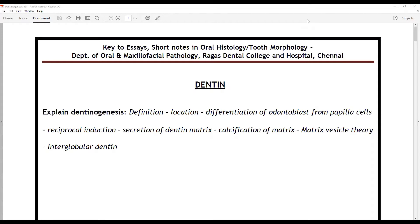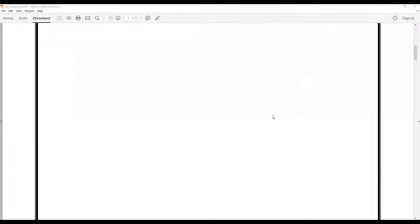When asked, you need to explain what dentinogenesis is, the process of differentiation of odontoblasts from papillary cells through reciprocal induction, the secretion of dental matrix, the calcifications, the matrix vesicle theory, and a part about interglobular dentin. Let's jump into the answers.